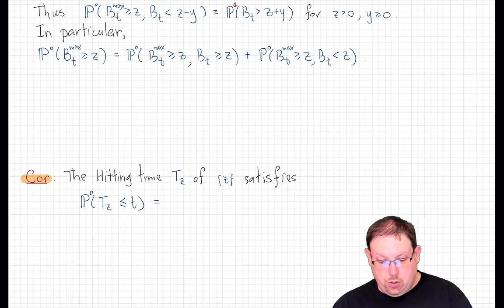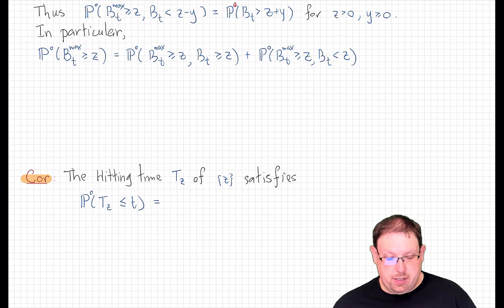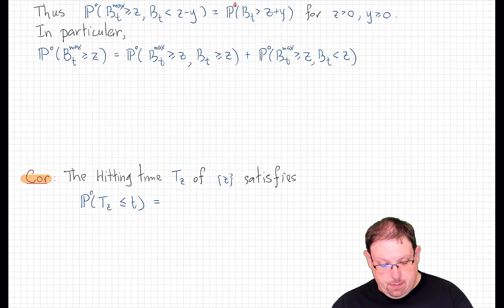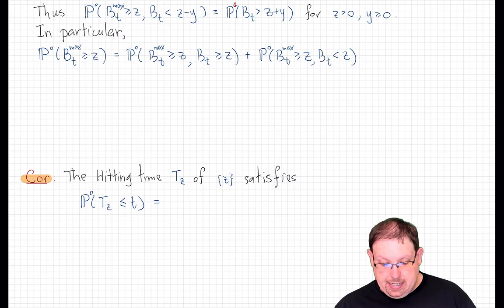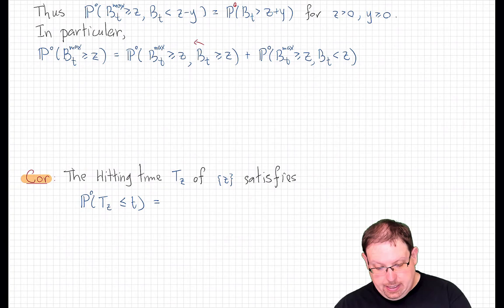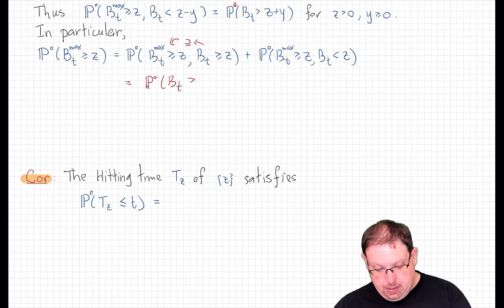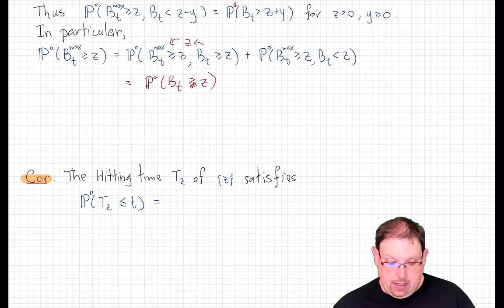From the reflection principle, these two events are equal and so are their probabilities, proving the joint distribution statement. Now from there we can derive Bachelier's principle. We look at the probability that the maximum is greater than or equal to z, and divide it into the intersection with the event that Brownian motion is bigger than or equal to z, or less than z at that time. If Brownian motion is bigger than z at time t, then the running maximum is as well, so that intersection is just the probability that bt is greater than or equal to z.